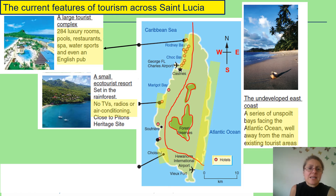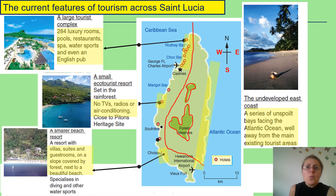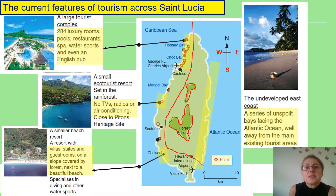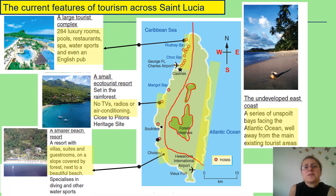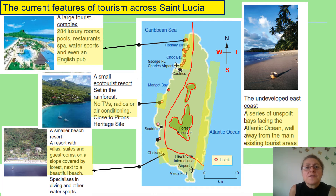Further south, there are smaller beach resorts with villas, suites, and guest rooms on forest-covered slopes next to a beautiful beach, specialising in diving and water sports. These attract fairly wealthy individuals who will be taking part in activities like jet skiing and diving to see the coral reefs and the marine life found within the ocean there.